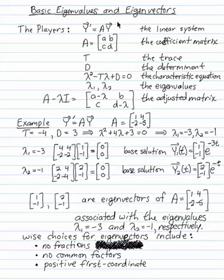Let's look at basic eigenvalues and eigenvectors in a 2 by 2 linear system. The linear system y prime equals Ay, the coefficient matrix A equals [a, b; c, d].